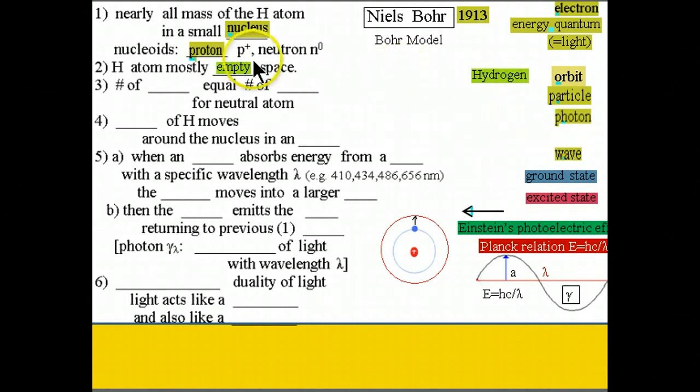The number of protons, we double click on protons, the number of protons and the number of electrons is the same. And the electron of the hydrogen atom moves around the nucleus in an orbit.